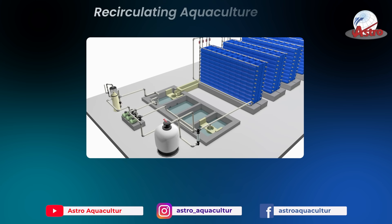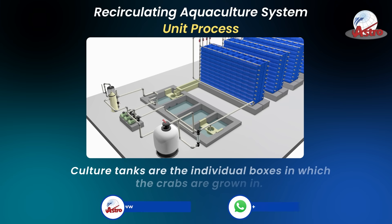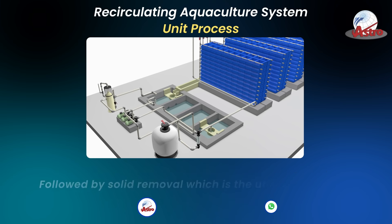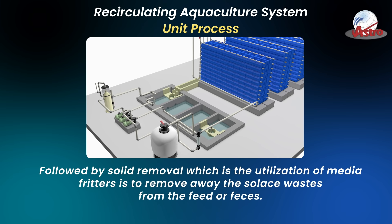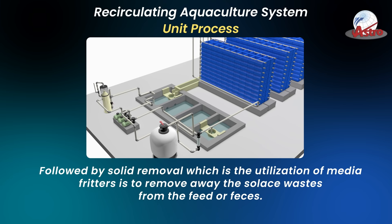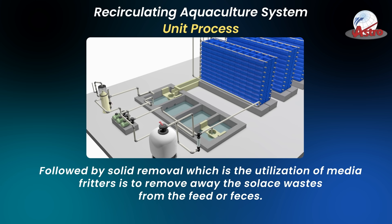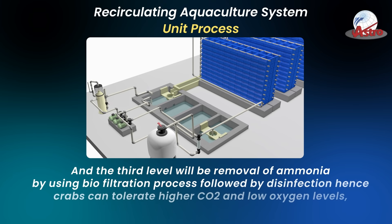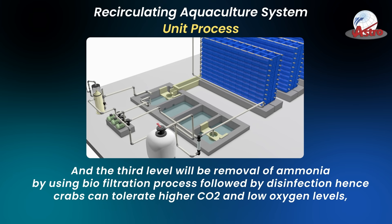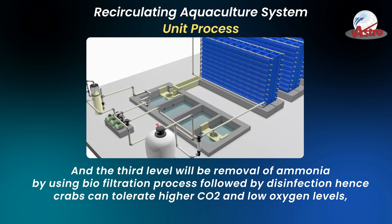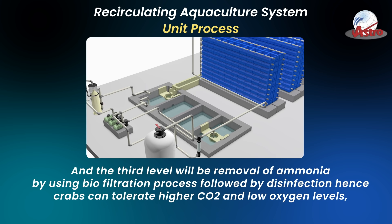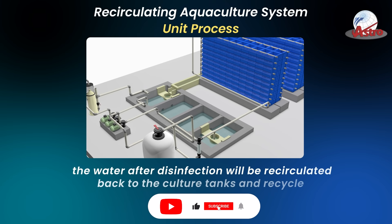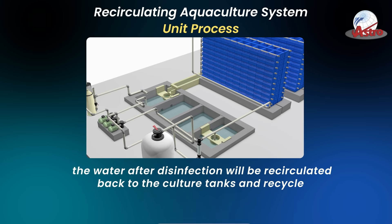Unit processes include: culture tanks, which are individual enclosures where the crabs are grown; solid removal, which uses media filters to remove solid wastes from feed or feces; and removal of ammonia using biofiltration. This is followed by disinfection. Crabs can tolerate higher CO2 and low oxygen levels. After disinfection, the water is recirculated back to the culture tanks.